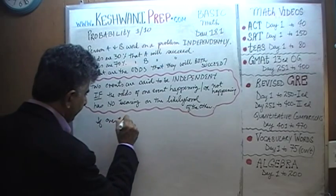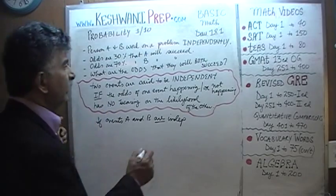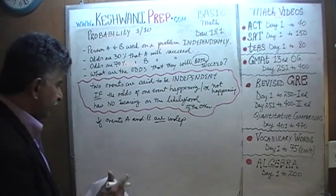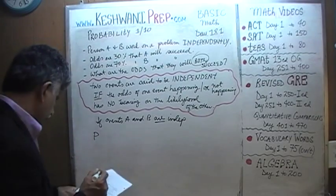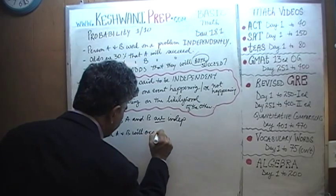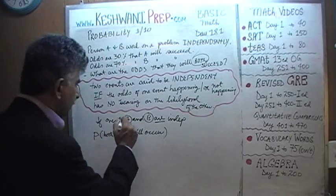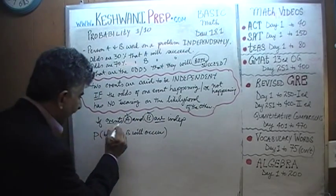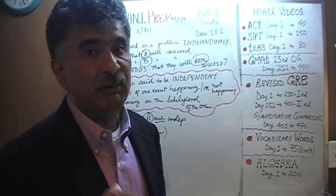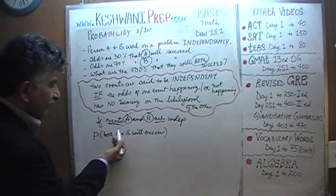If events A and B are independent, they're asking us: what are the odds that they will both succeed? This is how we write it — it's very important that we understand the notation. The probability that both A and B will occur. I'm using A and B to denote both the events and the names of the people. Event A is the event where person A will succeed, and event B is where person B will succeed.